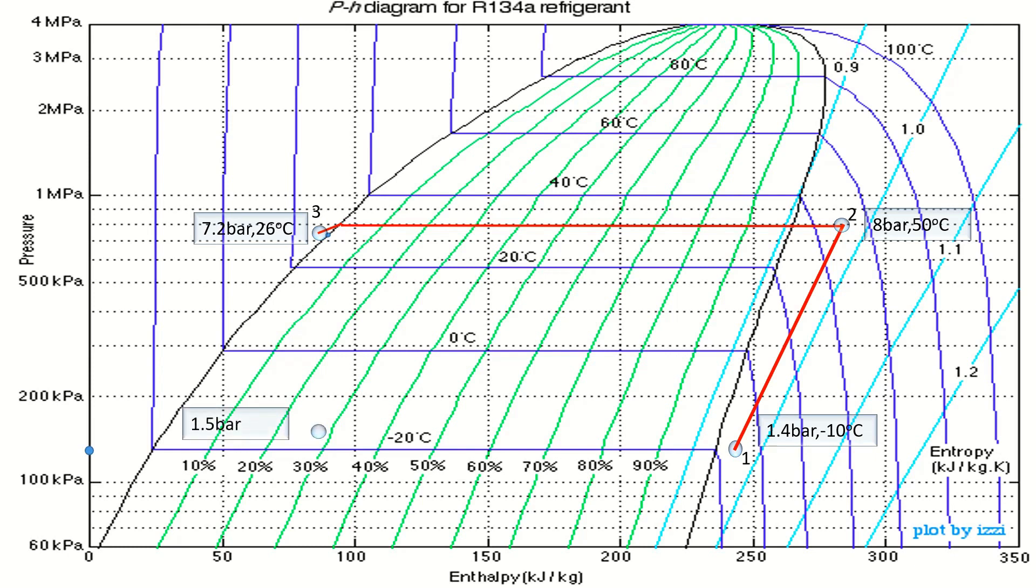Point 4, since we know that expansion process occurs in which enthalpy remains constant, we draw a vertical line according to the pressure 1.5 bar. Our pH diagram is completed. Now, we have to find enthalpy at each point.